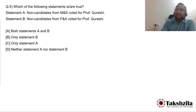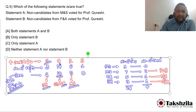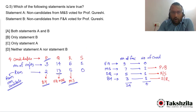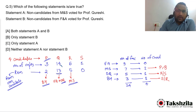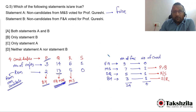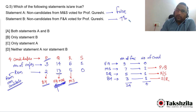Question 5: Which of the following statements are true? The first statement — non-candidates from M&S voted for Professor Q — is false, since they voted for R. The second statement — non-candidates from F&A voted for Professor Q — is true. So only statement B is true.